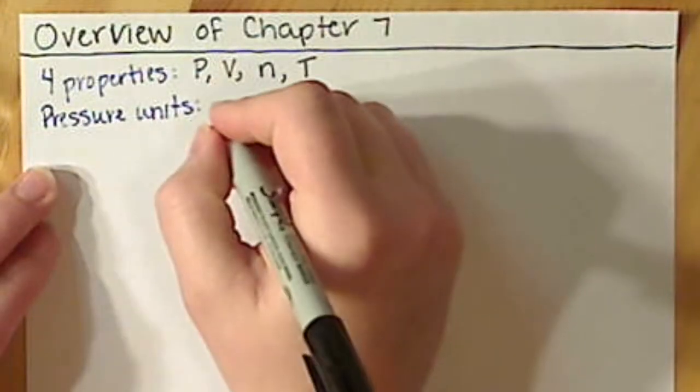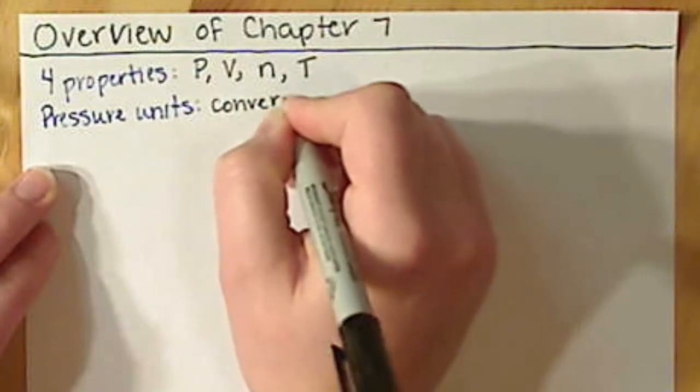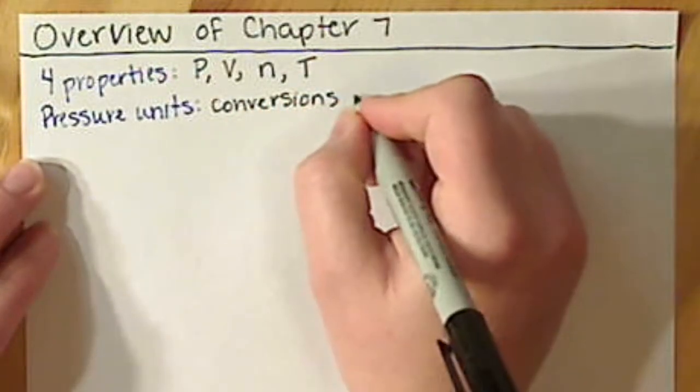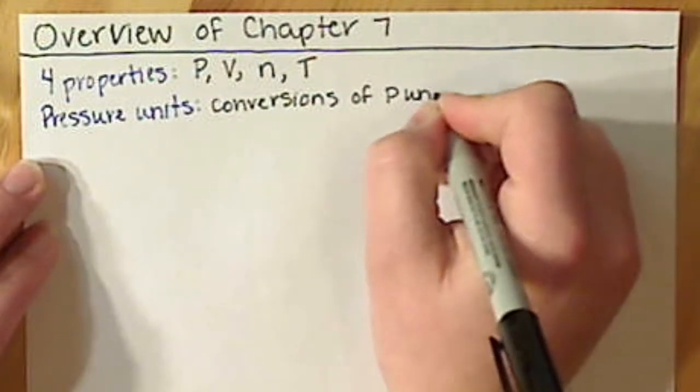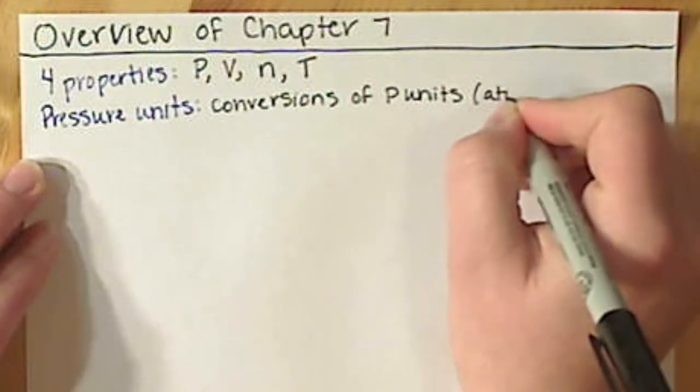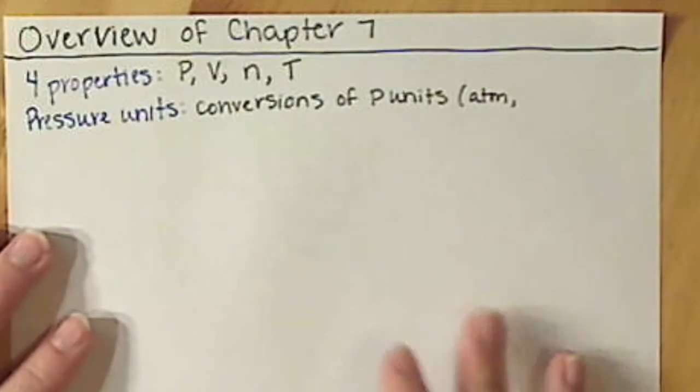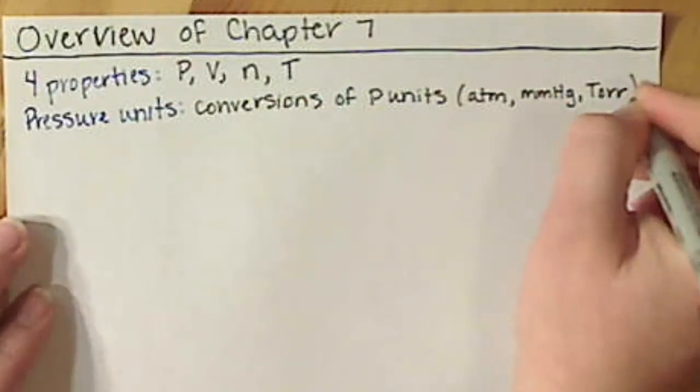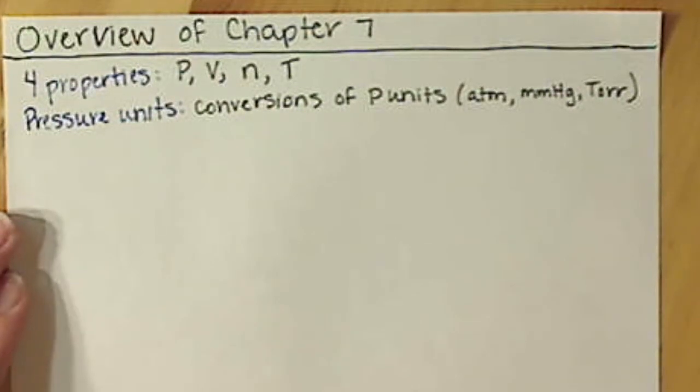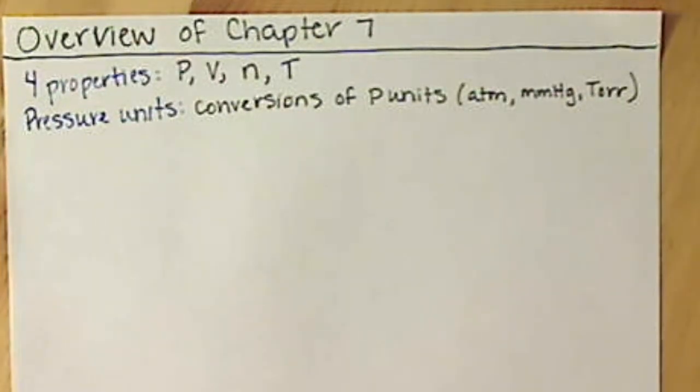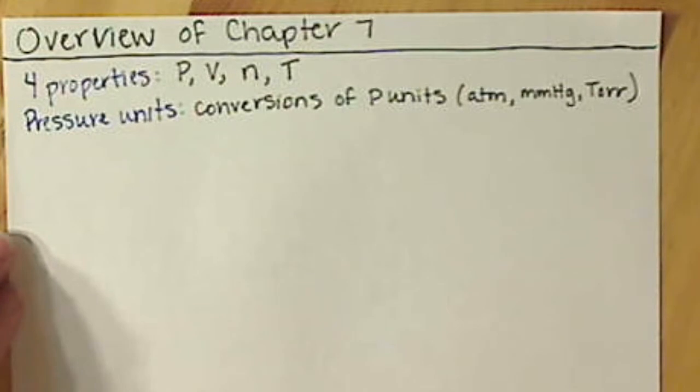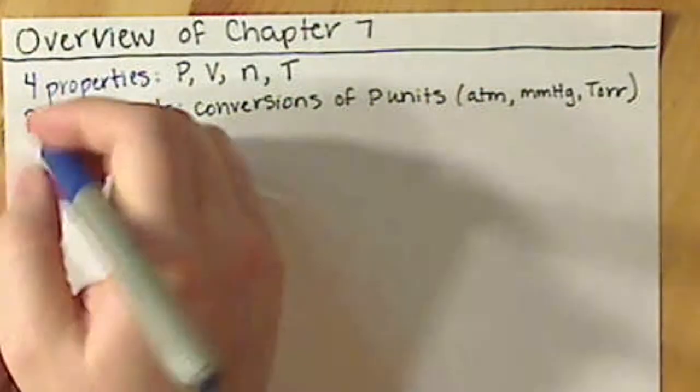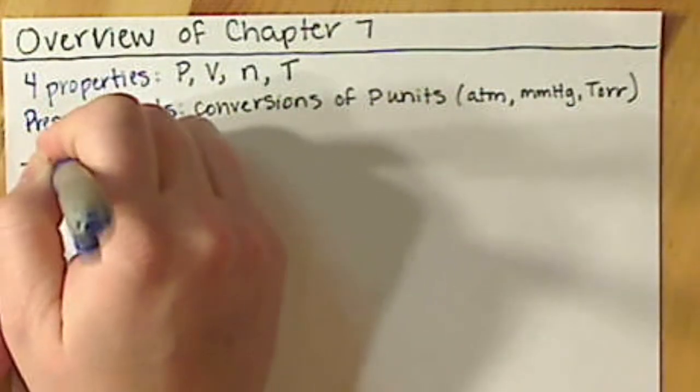The main ones to focus on: we have atmospheres, millimeters of mercury, Torr, and those really are the important ones. Kilopascal is probably in there as well, but those are kind of the more common ones. Then the really big point of Chapter 7, if you were going to focus on just one thing from Chapter 7, this would be it, and that is the ideal gas law.